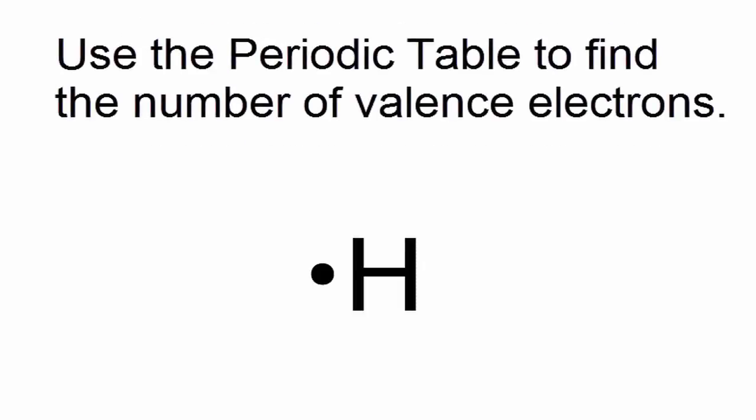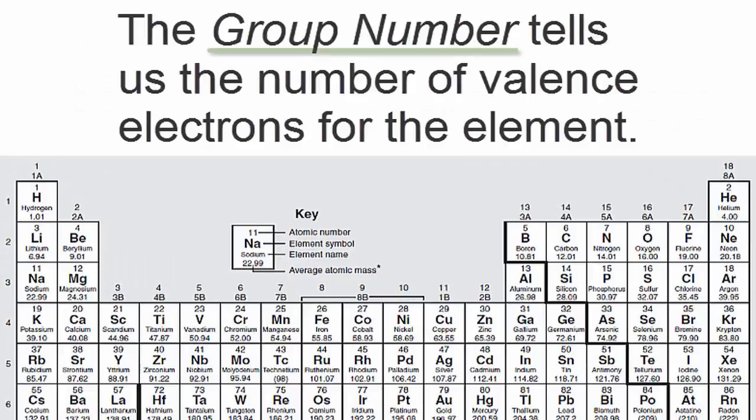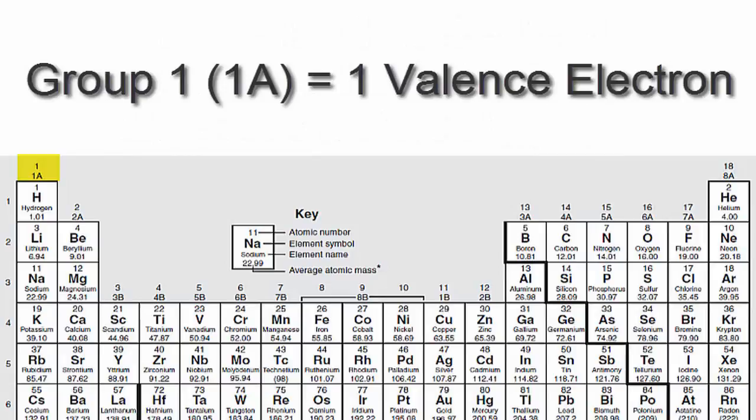We can find the number of valence electrons using the periodic table. The group number tells us the number of valence electrons for the element. For example, hydrogen has one valence electron because it's in group 1, sometimes called 1A.